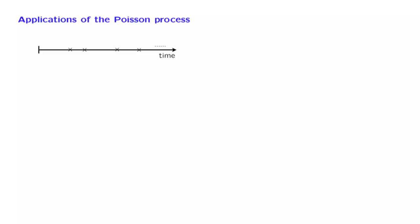In what kind of situations does the Poisson process arise? In general, it arises whenever we have events like arrivals that are somewhat rare and which happen in a completely uncoordinated manner, so that they can show up at any particular time.